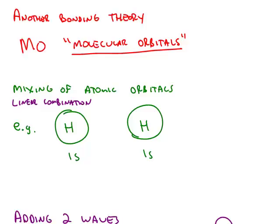In this theory, rather than mixing individual atomic orbitals on one atom, molecular orbital theory mixes atomic orbitals between different atoms.